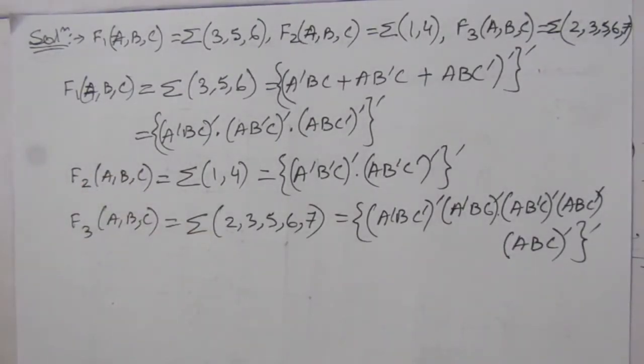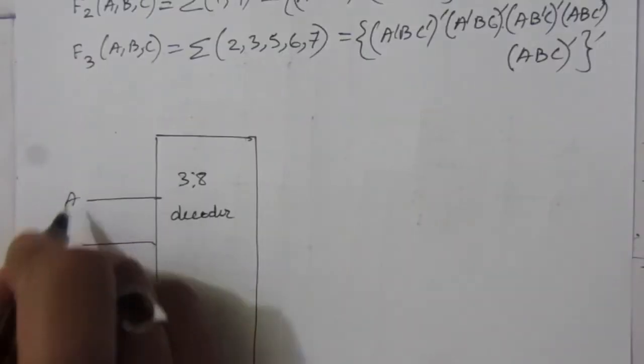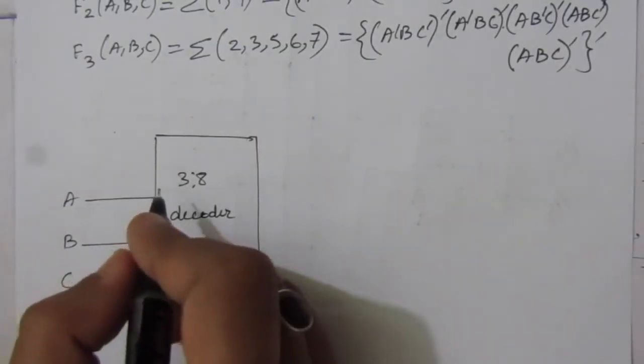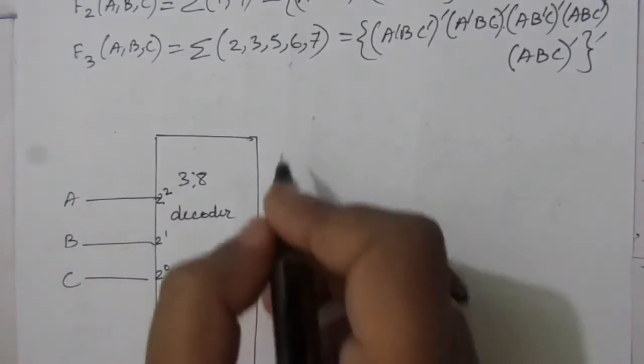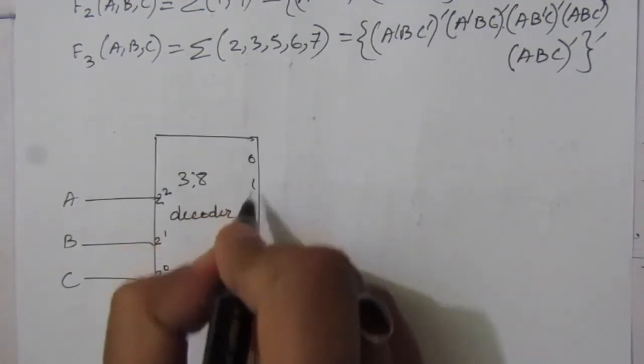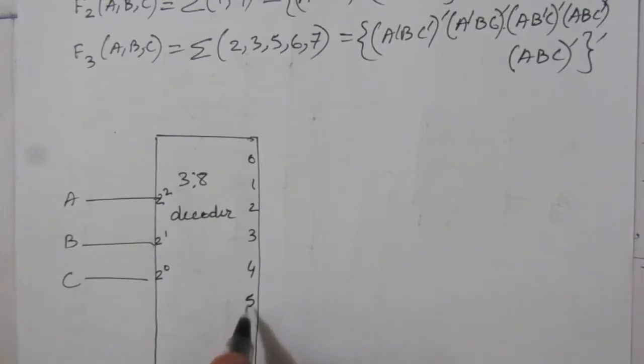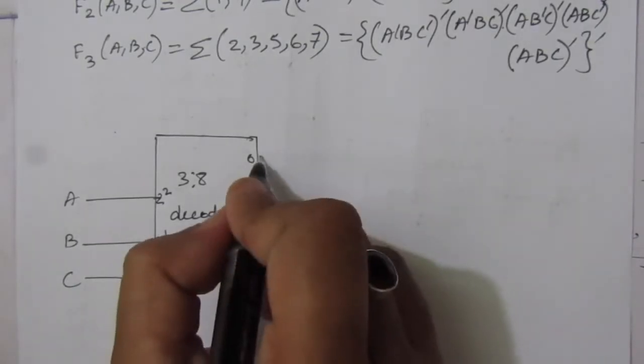Now we will use a decoder circuit. Since we have three inputs, we draw a 3×8 line decoder. It has three input lines A, B, and C — corresponding to 2², 2¹, and 2⁰ — and eight output lines numbered 0 through 7.